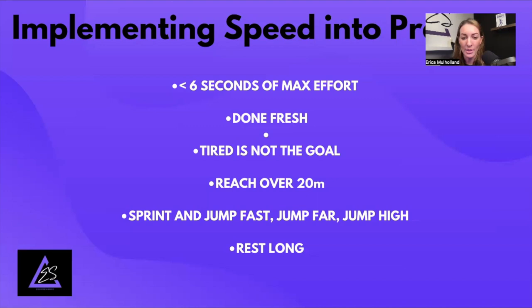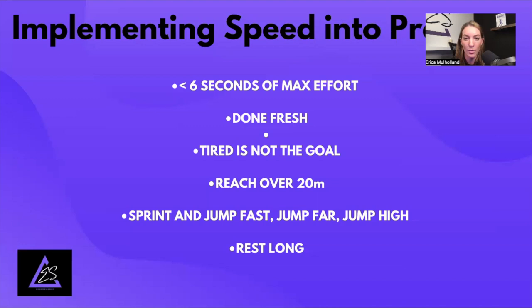As Tony Holler says, the three most important things in speed training are: sprint fast, jump far, and jump high. Sprint fast we've discussed. Jump far means creating horizontal force and working on acceleration. Jump high means working on vertical force production and ground contacts. And rest long — between speed drills, rest for five minutes or more. Even if an athlete feels like they could sprint again in 60 seconds, the ATP takes longer to replenish at the cellular level. For jumps and mechanical drills, about a minute of rest.